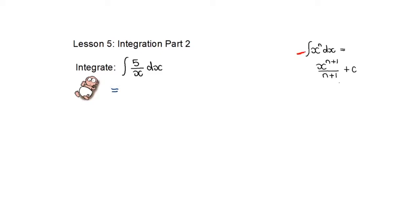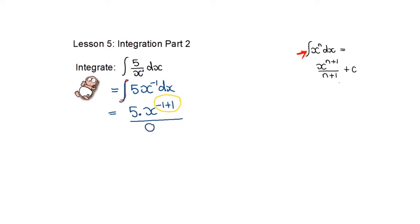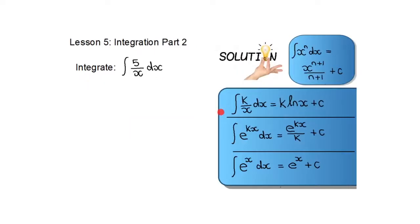If we try the next example using what we already know — integrating 5 over x — the x is in the denominator, and that's a problem because to use the power rule it must be x to the power n in the numerator. If I rewrite it as 5x to the power negative 1, then applying the rule gives a new exponent of 0, and I may not divide by 0.